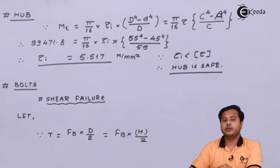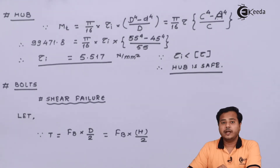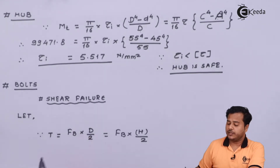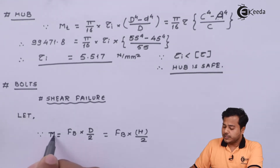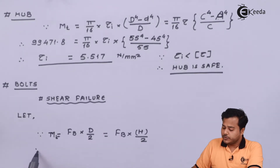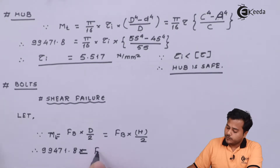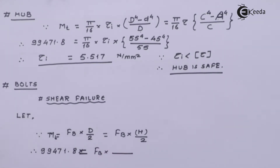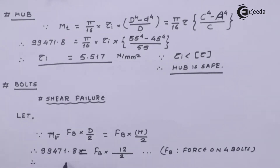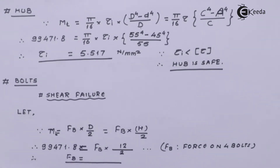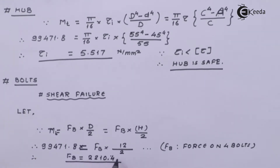Let us move ahead to the bolts. Bolts will fail under two conditions: failure in shear and failure in crushing. Using the standard formula from the PHD data book for torque transmitted, we substitute the values with H/2 = 12/2. FB is the total shear force acting on all 4 bolts. Upon solving this expression, we get the value of FB in Newtons.